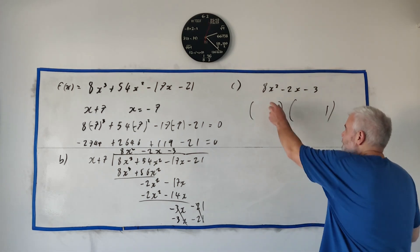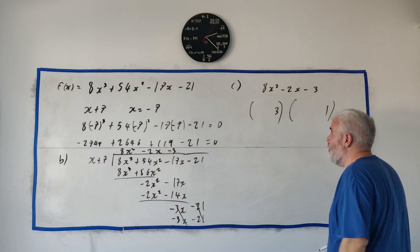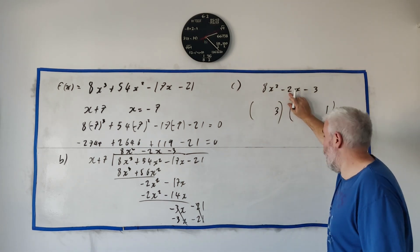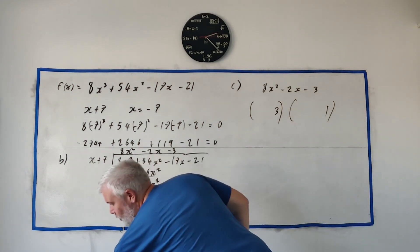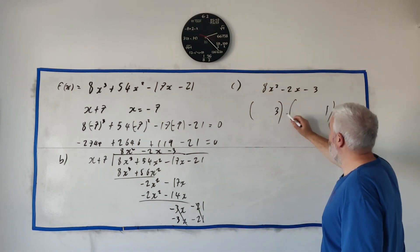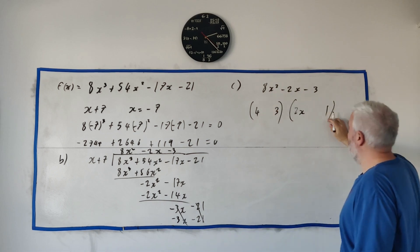We'll check if it factorizes two numbers to multiply to get three there's only one choice for that three and one. So that multiply to get eight and eight and one or two and four so we need a combination of them that will work to get 2x. So it is oh I better check my notes it is two and four.